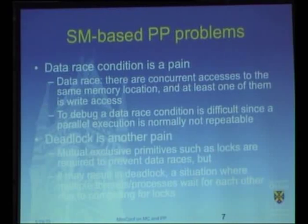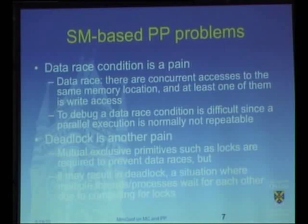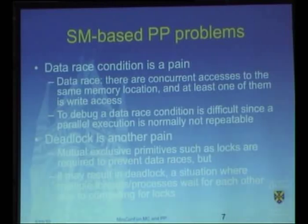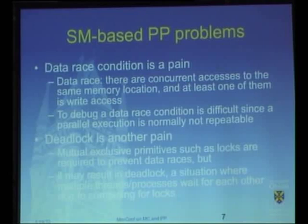I'm going to address two issues in parallel programming: data race and deadlock. A data race occurs when multiple processes write to the same memory location without locking protection or mutual exclusion. Deadlock is obvious. These two issues are very hard in shared-memory parallel programming, especially when stressing software reliability. The problem is exacerbated compared to sequential software because data races are even harder to debug in parallel, and so is deadlock.